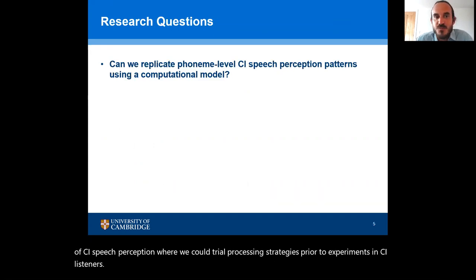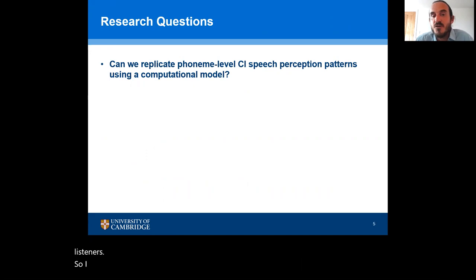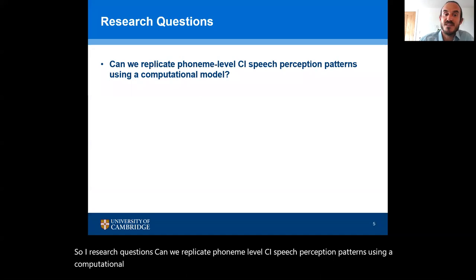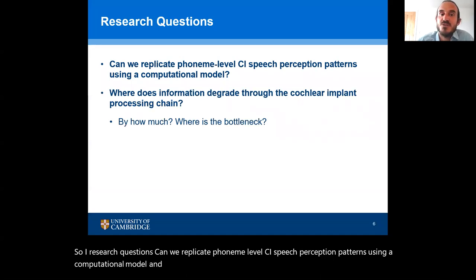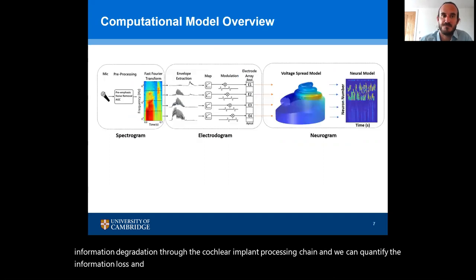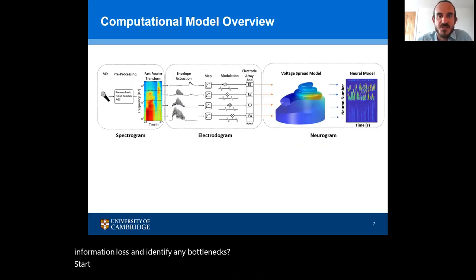Because of all of these issues, it would be really helpful to have a computational model of CI speech perception where we could trial processing strategies prior to experiments in CI listeners. Our research question is: can we replicate phoneme-level CI speech perception patterns using a computational model, and once we've done that, can we use that model to evaluate information degradation through the cochlear implant processing chain and quantify the information loss and identify any bottlenecks? I'll start with an overview of our computational model.